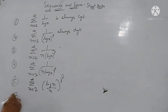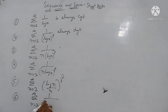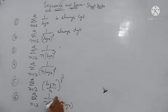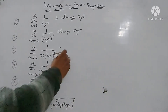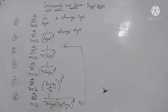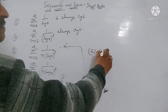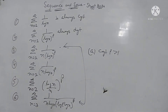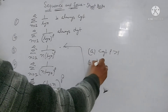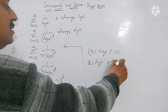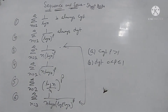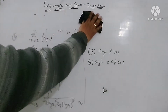Sixth: the series n varies from 3 to infinity of 1 upon n·log n·(log log n)^P. For this form, it is convergent when P is greater than 1, and divergent when P is greater than 0 and less than or equal to 1. These are the basis on which we will solve questions — very very important.